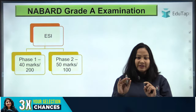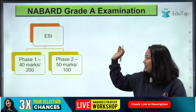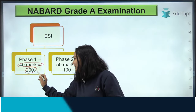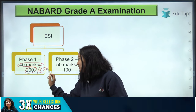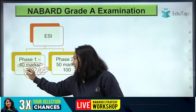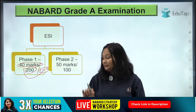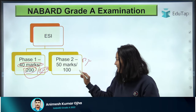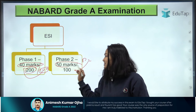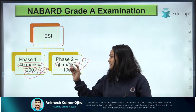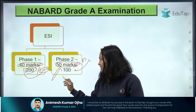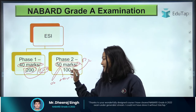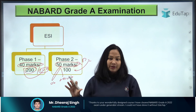Coming to the ESI component: please understand that ESI in Phase 1 is 40 marks out of 200 marks. And even in the merit, which is of 100 marks, there is also ESI for 40 marks. If you are talking about Phase 2 — which is Paper 2, that is of 100 marks — roughly almost your ESI is 50 marks, combining both objective and subjective descriptive components.